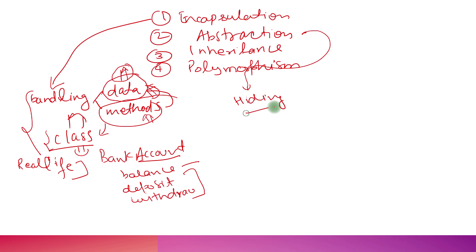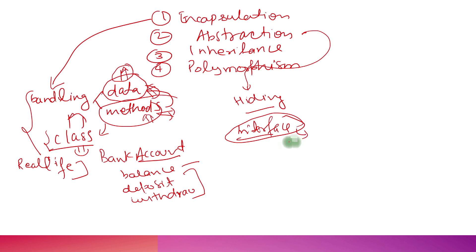Abstraction means hiding complexity and only exposing the functionality needed by the end user. Whatever logic is written inside a method is abstracted away — the client just needs to know the method name and what it does, not how it works internally. A real-life example: pressing a car's start button starts the engine without you worrying about how fuel burns. In Java, interfaces represent abstraction — you expose the interface to the client and they don't need to know the implementation.